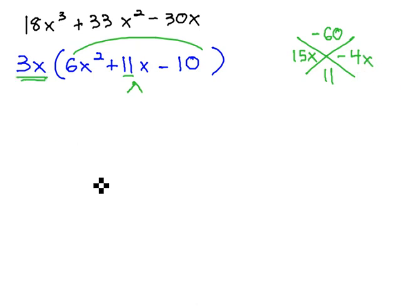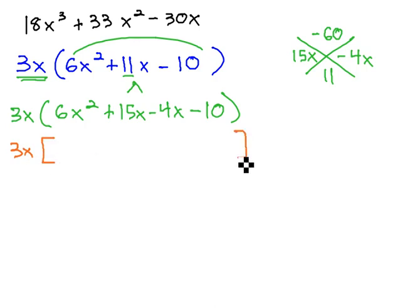This GCF isn't going to go away, it's just going to be in front of everything as we continue to work. We have 6x², the 11x is split into 15x and negative 4x minus 10. Again, we'll keep the 3x in front of everything, and then we'll factor inside the parenthesis by grouping.